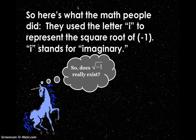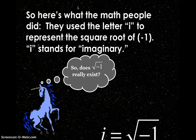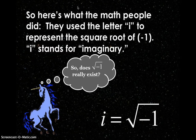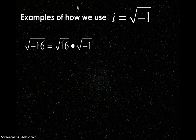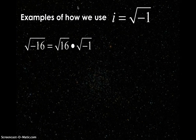However, here's what we did. Just like unicorns, we're going to go into our imagination and envision something. We're going to use the letter i to represent the square root of negative 1 — and by i, we mean imaginary. So does the square root of negative 1 really exist? It actually does. We're going to use this imaginary unit, lowercase i, to stand for the square root of negative 1.